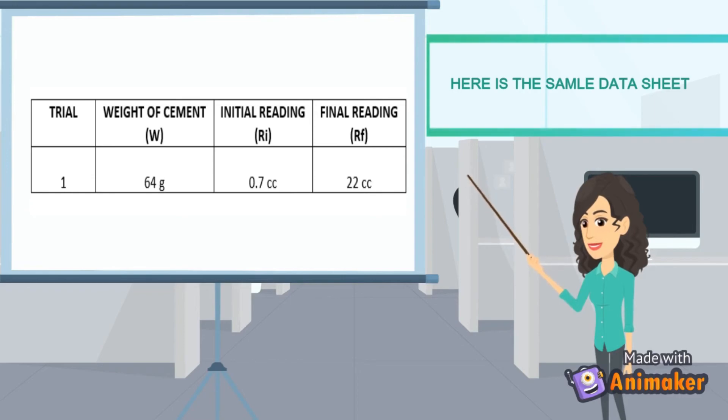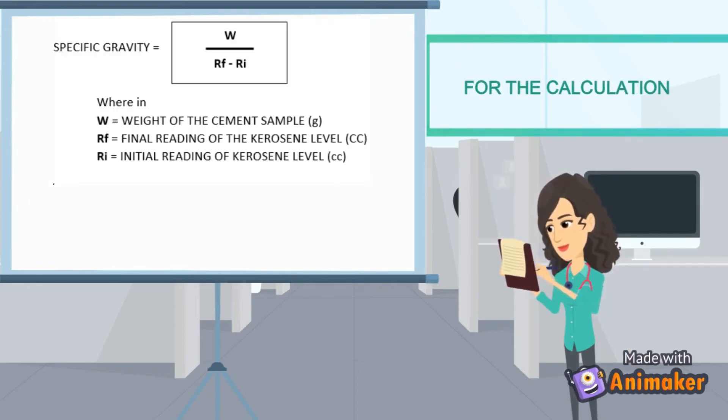For the calculation, specific gravity equals weight of the cement sample over final reading of the kerosene level minus initial reading of the kerosene level.